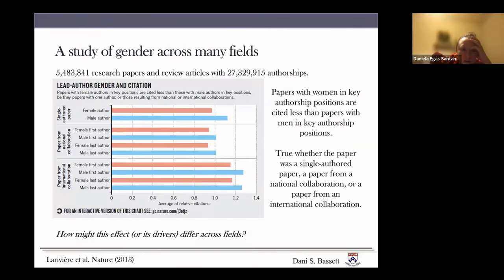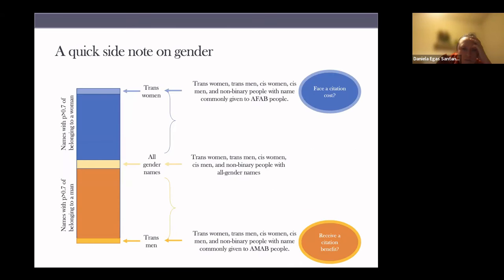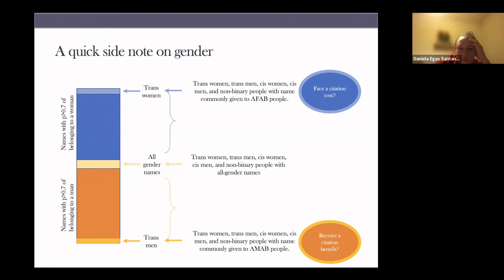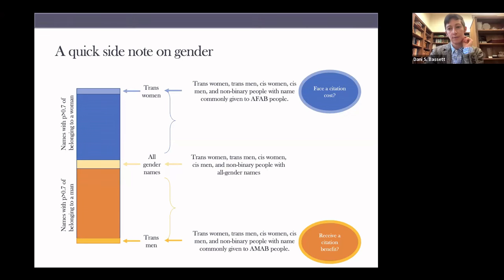Quick clarification: there are two bins, and then there's a group of people who cannot be classified and are therefore not included in the analysis.